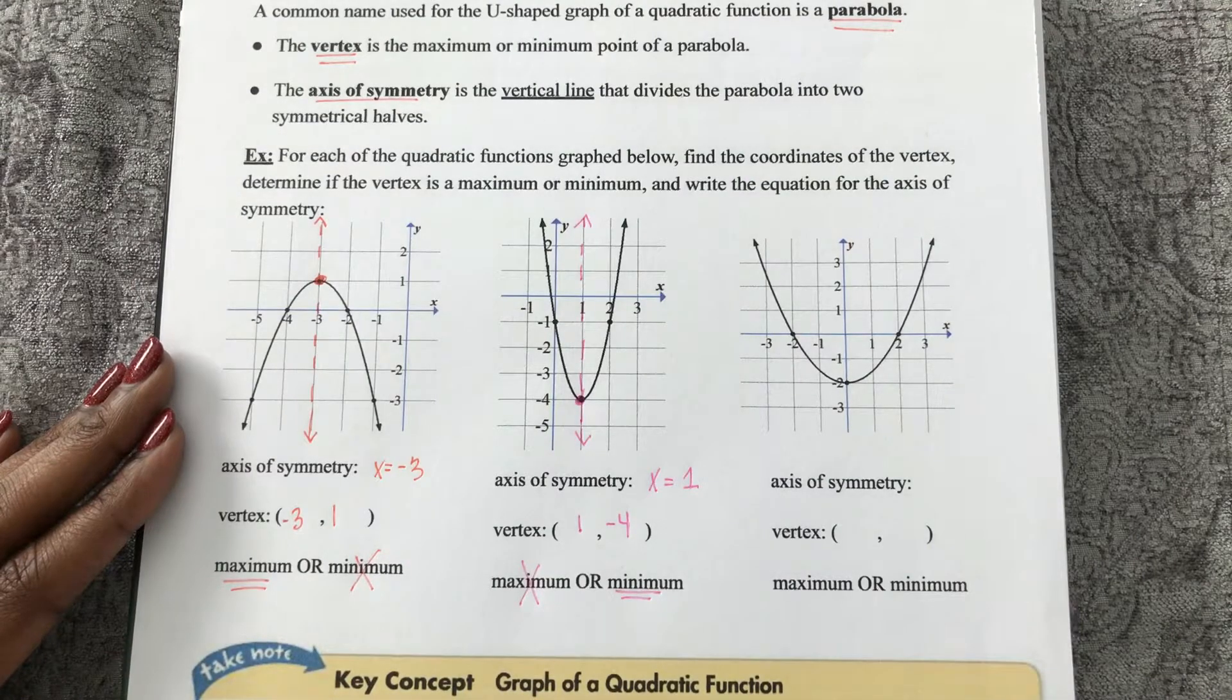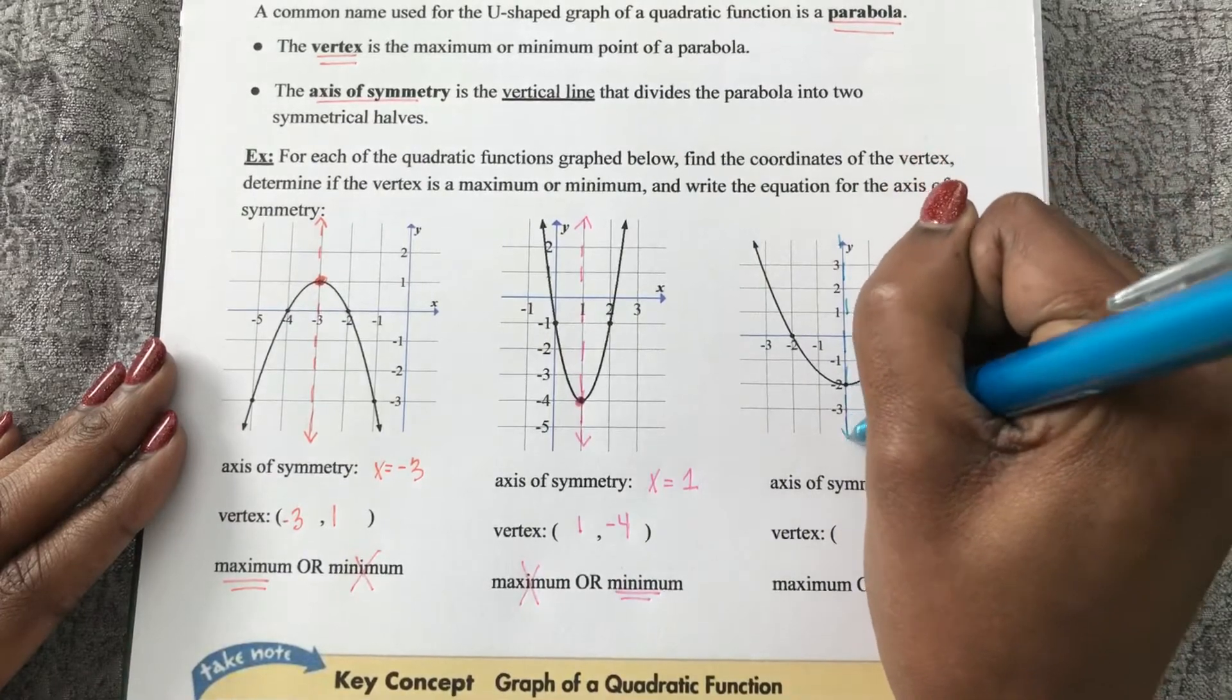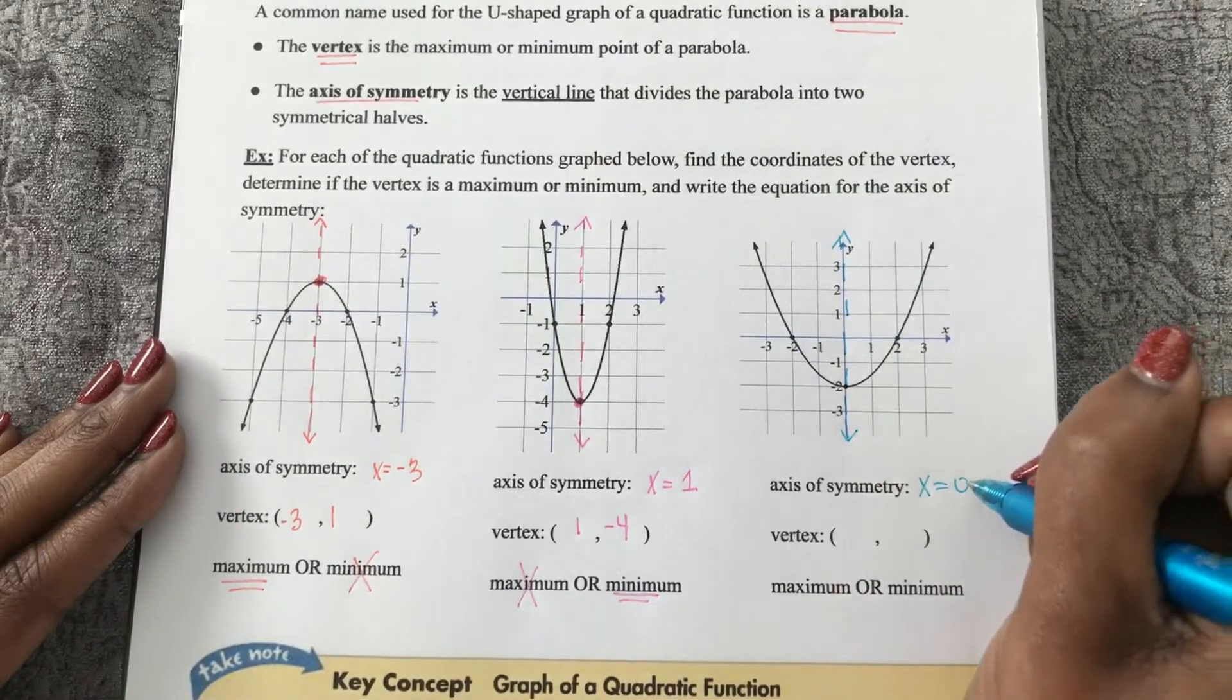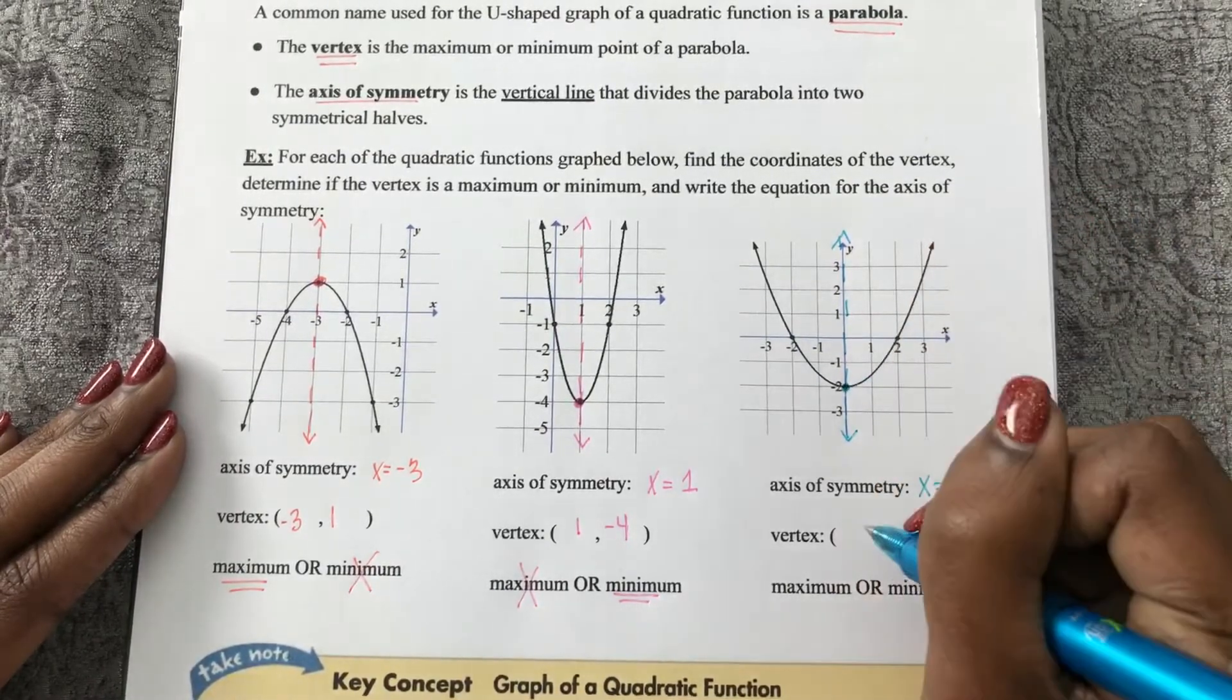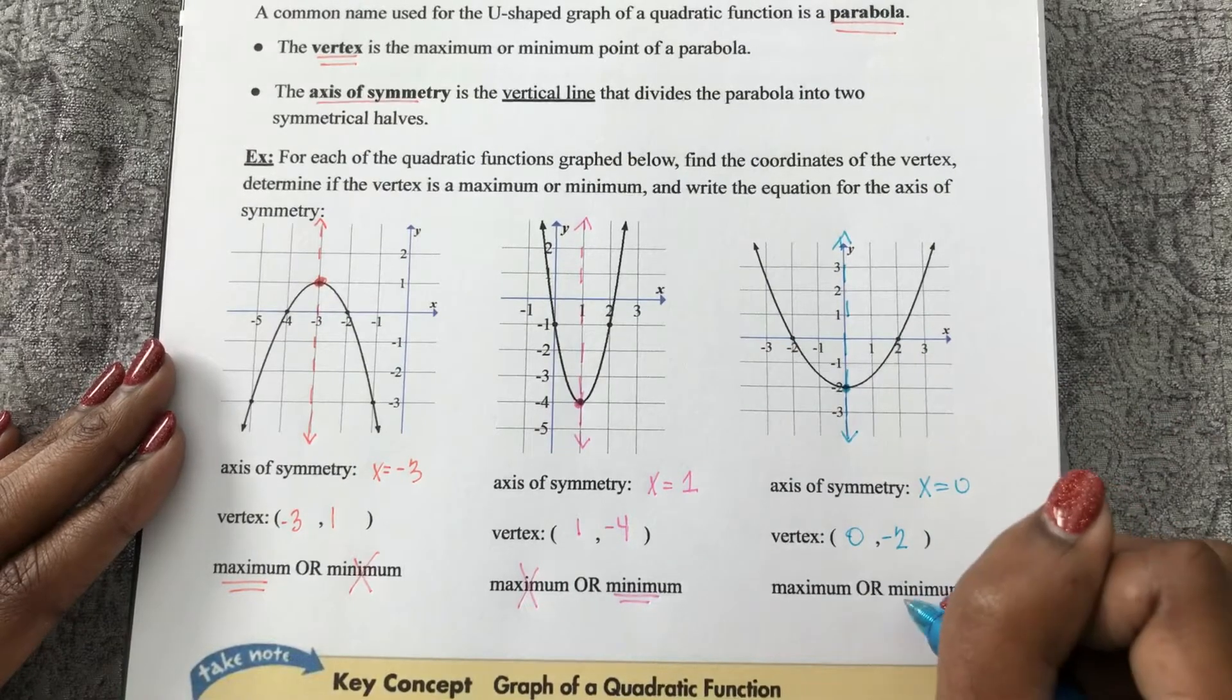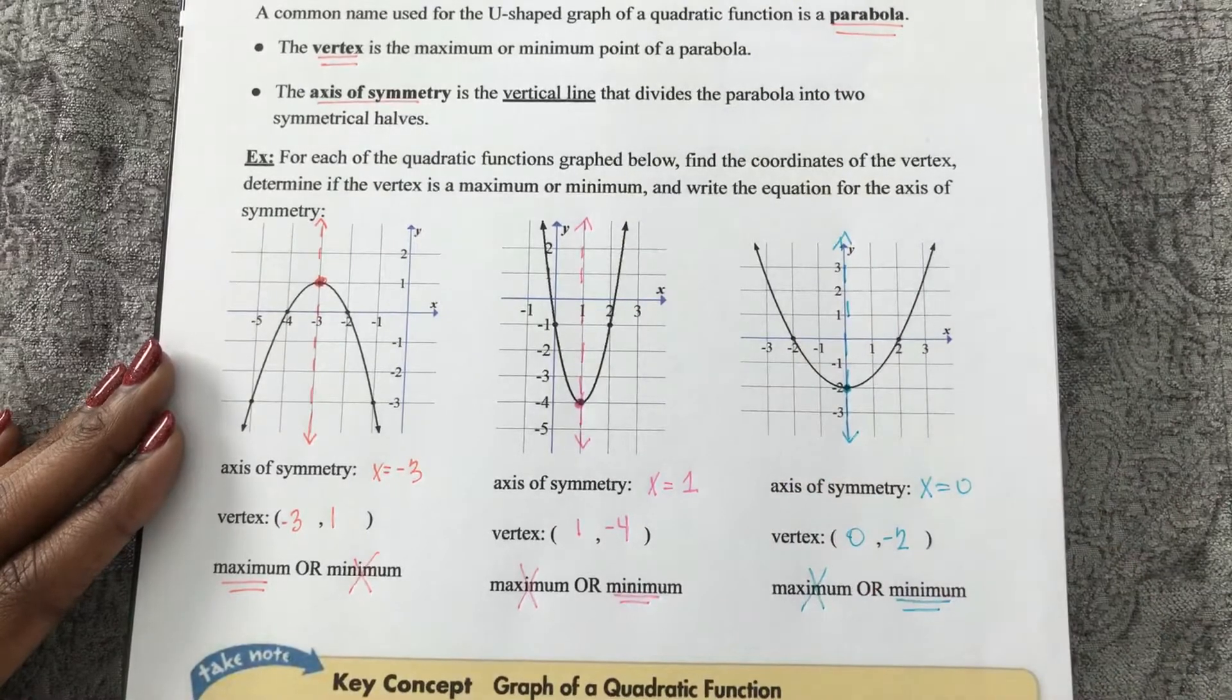And last but not least here, I see my axis of symmetry down the center, which is the vertical line x equals 0. It goes through my vertex, 0, negative 2. And once again, this is a minimum y value because all of my y values go up from there.